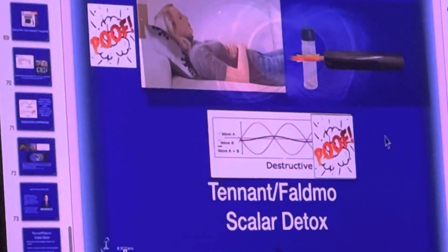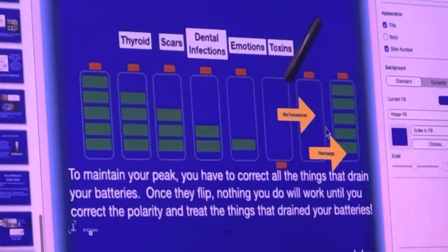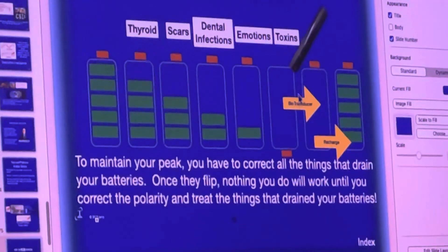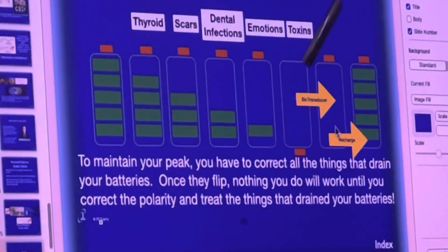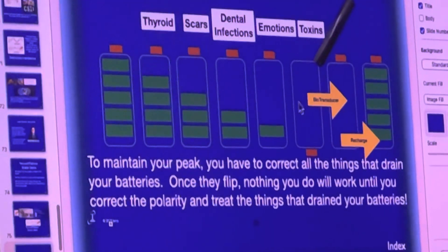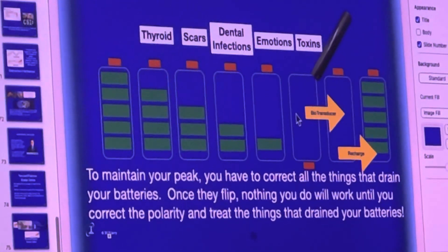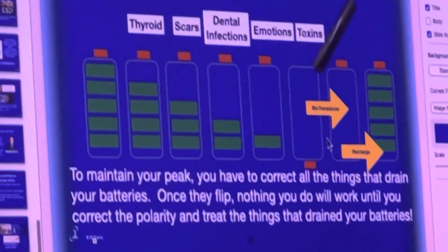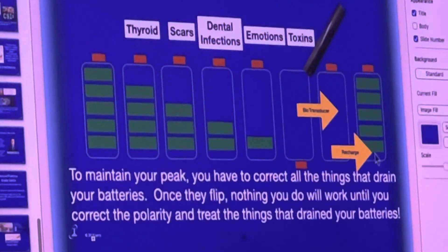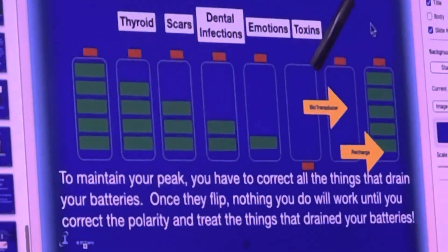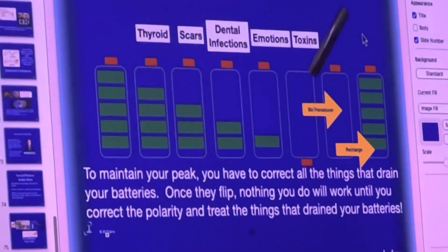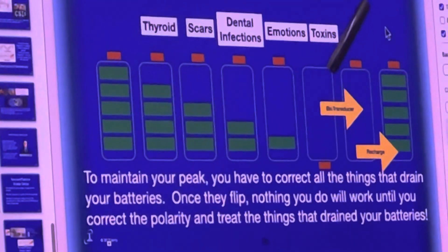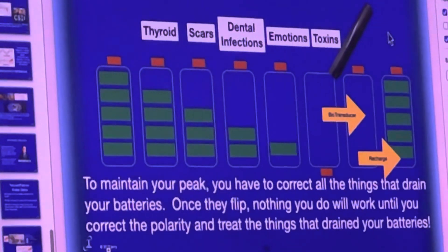In summary, we start off with a battery that's charged up, and all these various things begin to discharge it until the battery is totally discharged. Once it flips upside down it won't take a charge, and nothing you do really works. With scalar energy you can flip the polarity back up, but it's still discharged — so then you use electromagnetic energy, like from the biomodulator, to recharge the battery. Once you have power in the system again, the body will start making new cells and healing.